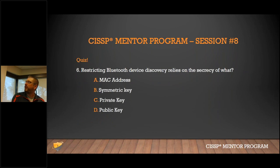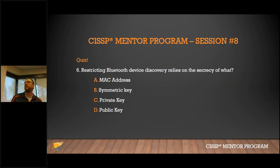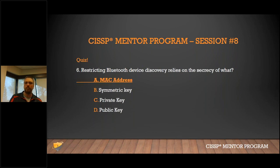Restricting Bluetooth discovery relies on the secrecy of what? MAC address, symmetric key, private key, or public key? Private key is about trusted connections already made. Symmetric key is about encryption, not discovery. MAC address is the answer — that's what Bluetooth discovery relies on.